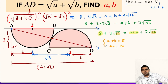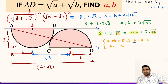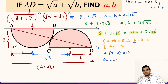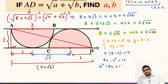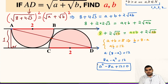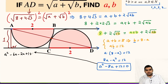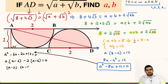We now have two equations and two unknowns. Using the substitution method: B = 8 − A. Substituting into AB = 12 gives A(8 − A) = 12, so 8A − A² = 12. Rearranging gives the quadratic equation A² − 8A + 12 = 0. Factoring: (A − 2)(A − 6) = 0.